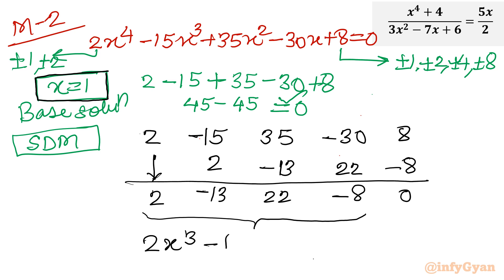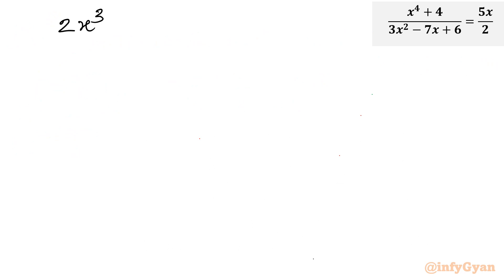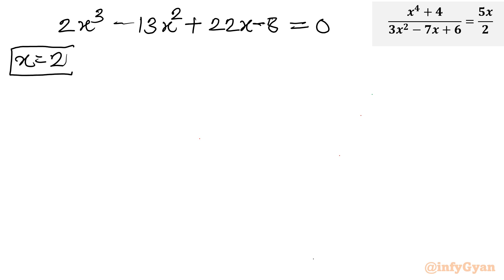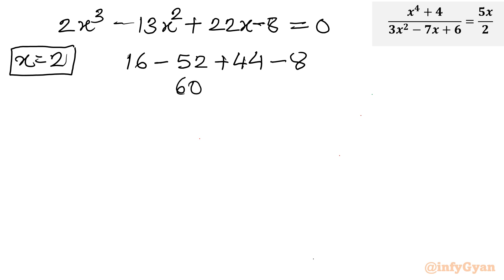The resulting cubic equation is 2x cube minus 13x square plus 22x minus 8 equal to 0. Again applying Rational Root Theorem, put x equal to 2: 2 times 8 is 16, minus 13 times 4 is 52, plus 22 times 2 is 44, minus 8. That gives 16 plus 44 equals 60, minus 52 minus 8 equals minus 60. So 60 minus 60 equals 0, confirming x equal to 2 is a base solution for this cubic equation.